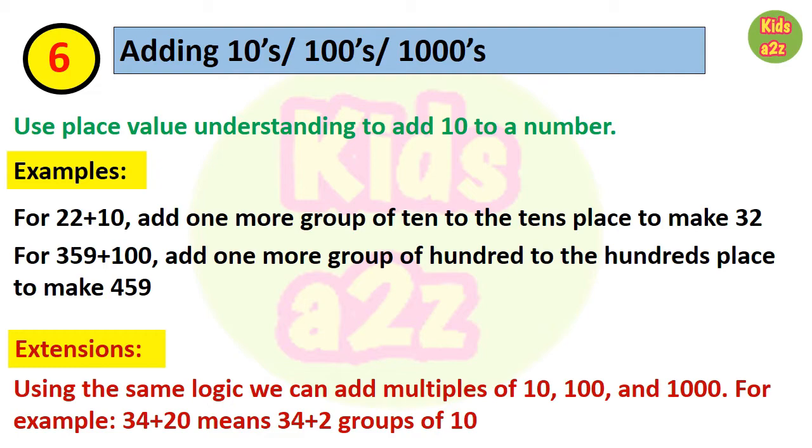Using the same logic, we can add multiples of 10, 100, or 1000. For example, if we want to add 34 plus 20, that means we need to add 2 more groups of 10. That is 5 tens plus 4 ones, which is 54.